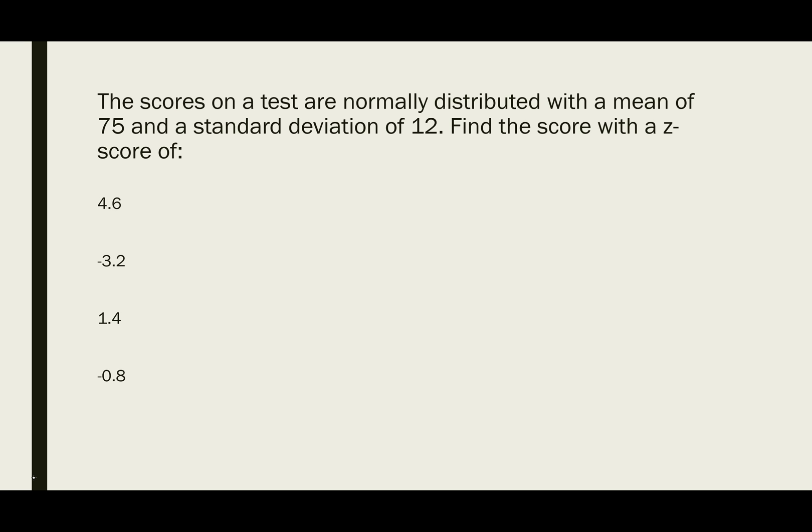In this example, we have scores on a test that are normally distributed with a mean of 75 and a standard deviation of 12. We want to find the score with a z-score of, and the first one is 4.6.